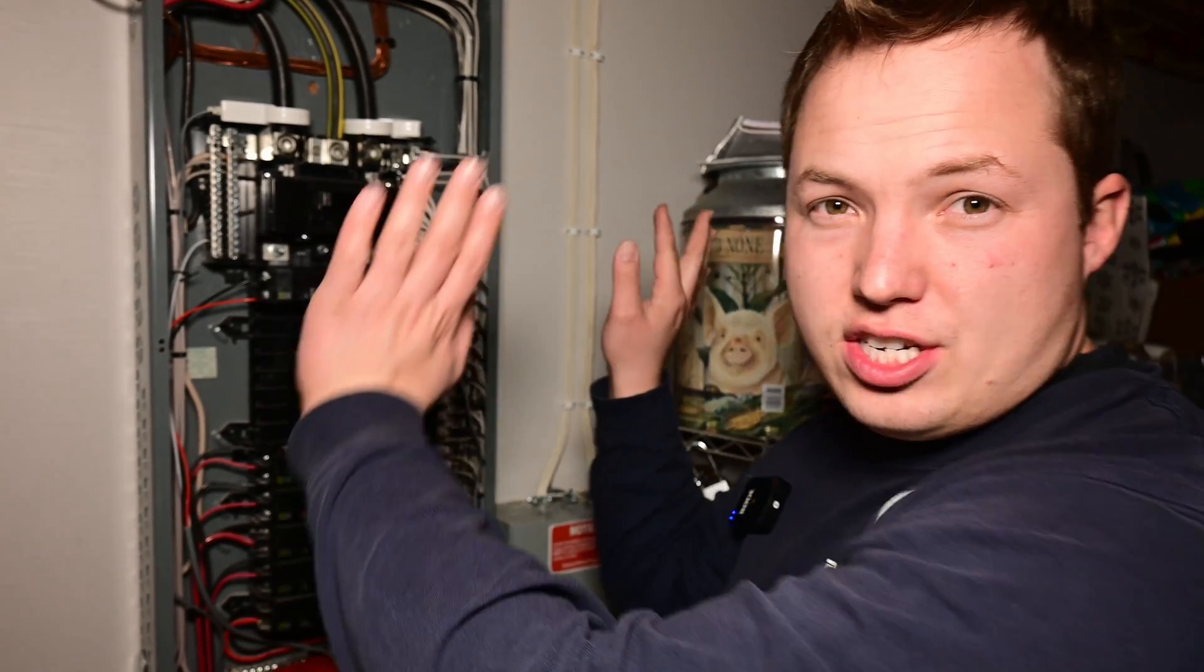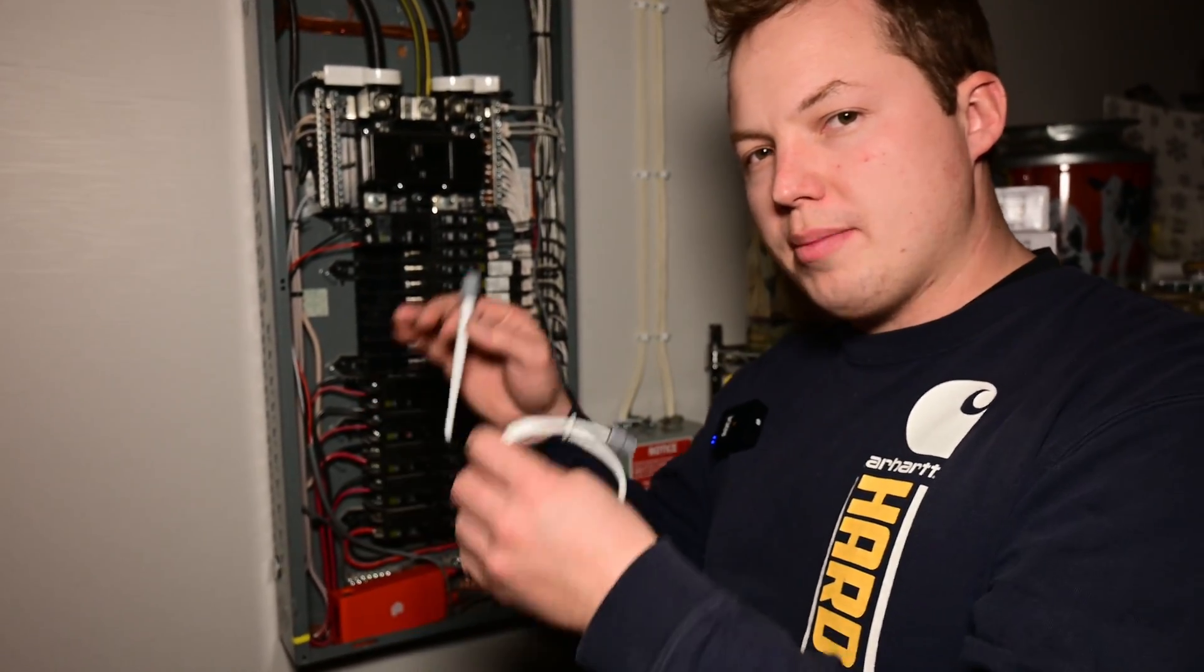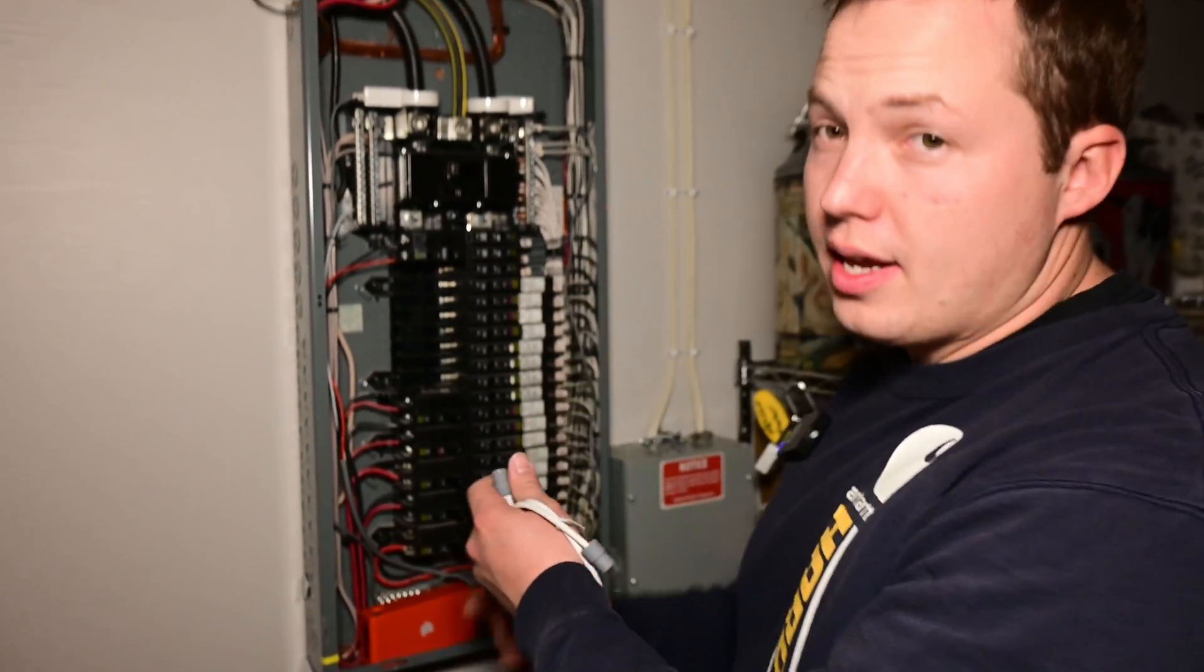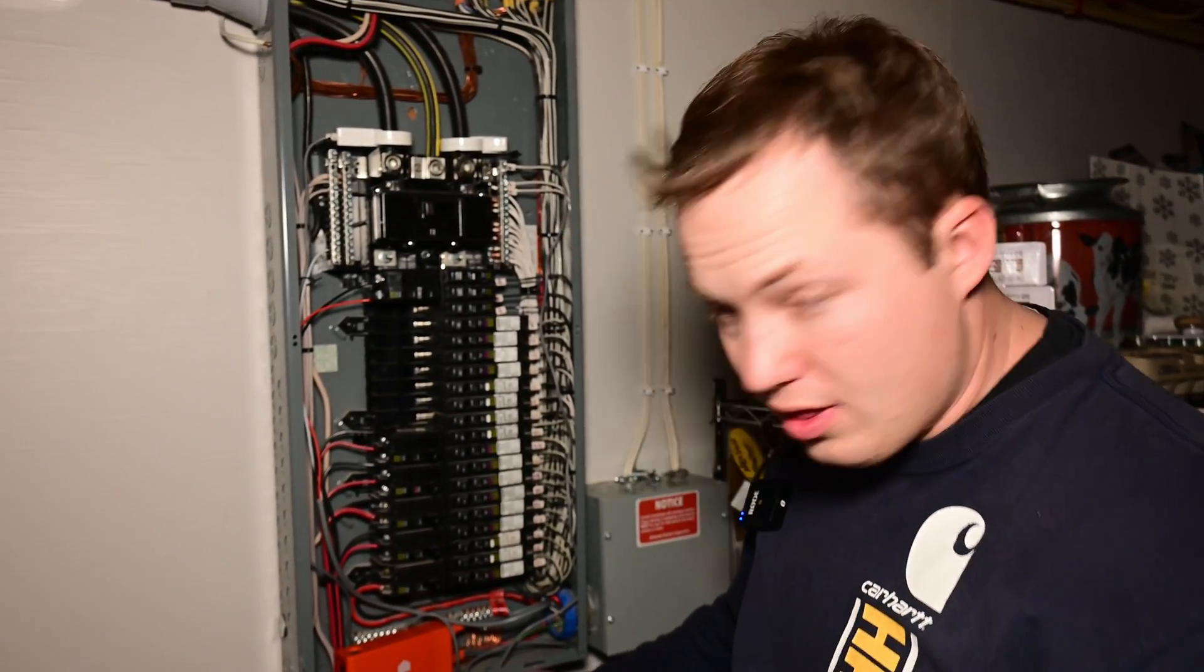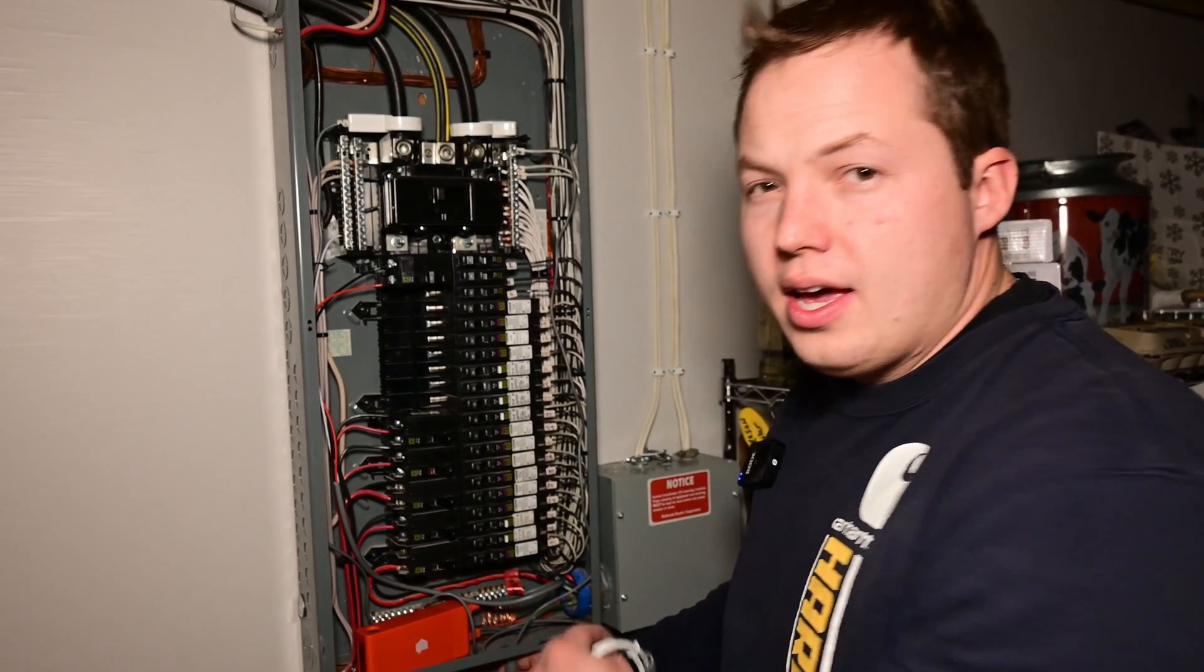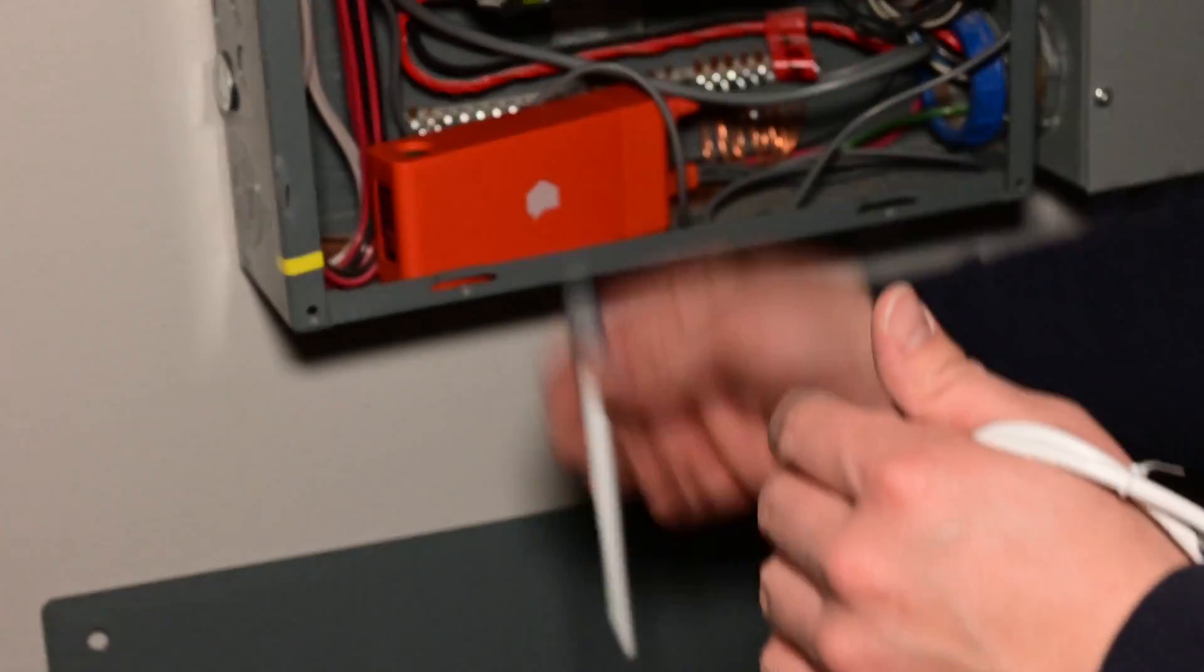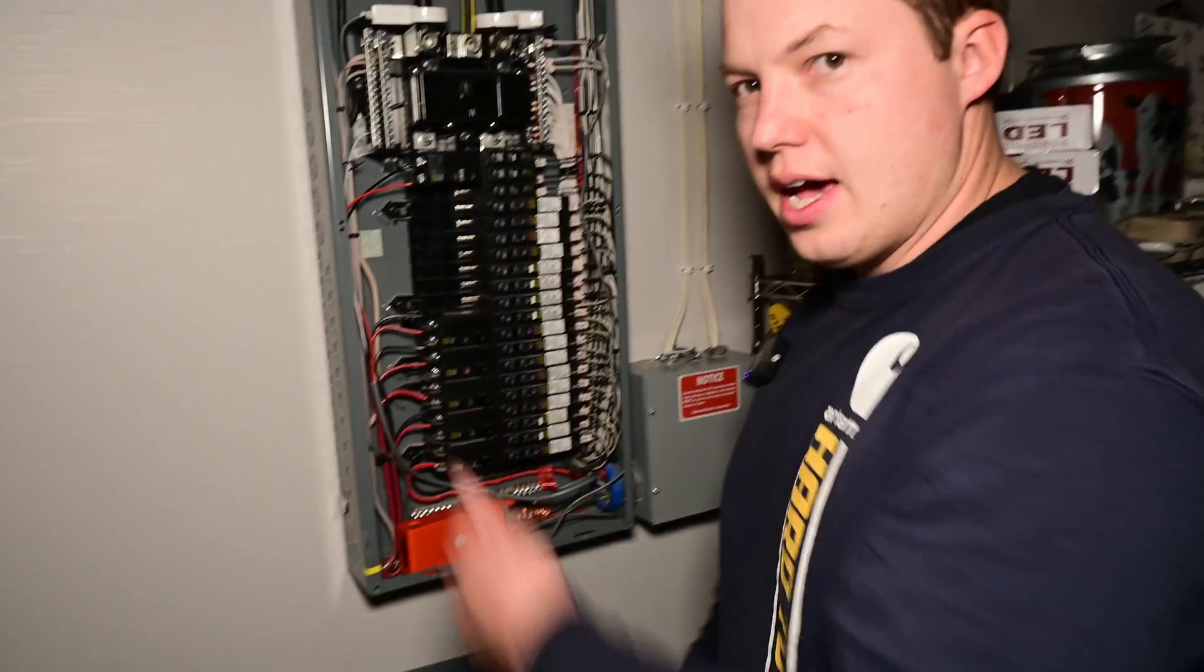If your panel happens to be flush-mounted, meaning that the panel is recessed back into the wall, you will take your antenna and you'll have to stub it down. So you'll open a knockout in the bottom of the panel, most likely, or the top, depending on your scenario, and then this antenna is going to stick down in the wall. It'll be behind the drywall, and it'll still work perfectly fine. So if you do have a flush-mounted panel, you'll be going down or up with your knockout instead of going out the side.